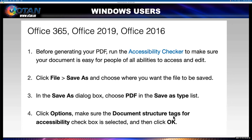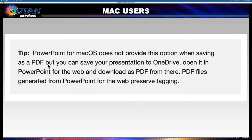This is critical. What are tags? Tags are metadata that indicate the structure of a document. They communicate the order in which items will be read. When you make a PDF, you want to preserve the accessibility of the original document by including its tags. For Mac users, Microsoft's help page tells us that the Mac OS does not provide this option when saving as a PDF, but you can save your presentation to OneDrive, open it in PowerPoint for the web, and download as PDF from there. PDF files generated from PowerPoint for the web preserve tagging.